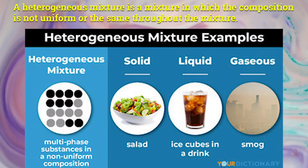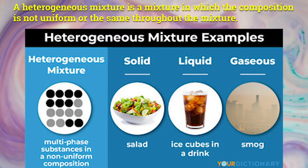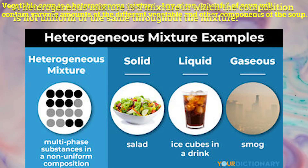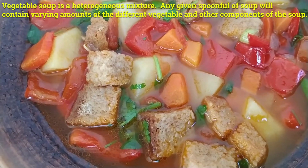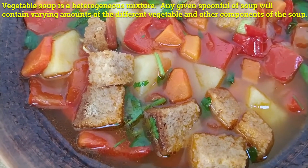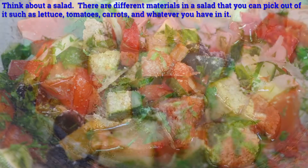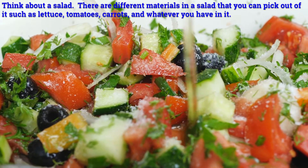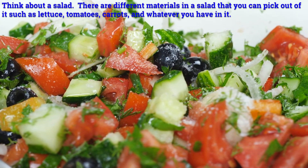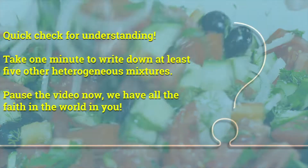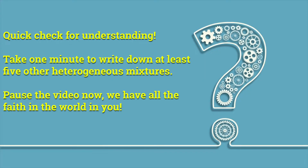Now let's talk about heterogeneous mixtures. A heterogeneous mixture is a mixture in which the composition is not uniform or the same throughout. Vegetable soup is a heterogeneous mixture — any different spoonful of soup will contain varying amounts of different vegetables and other components. Think about a salad: there are many different materials in a salad that you can pick out, such as lettuce, tomatoes, carrots, and whatever else you have in it. Quick check for understanding: take one minute to write down at least five other heterogeneous mixtures. Pause the video now — we have all the faith in the world in you.